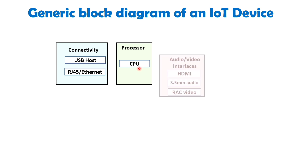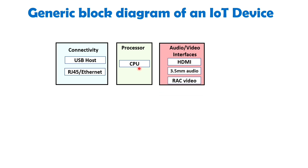Next is the audio-video interface. Interfaces such as HDMI and RCA are utilized within an IoT system to capture and record audio and video content. These interfaces enable the integration of audio and video recording capabilities, allowing the system to gather multimedia data for analysis and further processing.